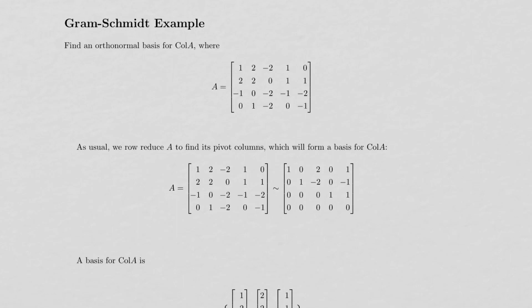If all we wanted was a basis for the column space, we could do what we did in another example that I did recently, where we just take the matrix A, row reduce it, identify the pivot columns, and there is a basis.